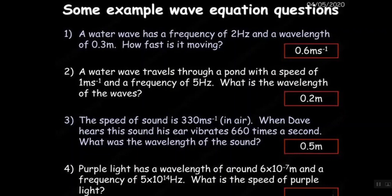Purple light has a wavelength of around 6 times 10 to the minus 7 meters and a frequency of 5 times 10 to the 14 Hertz. What is the speed of it? So we'll multiply them together and if you take a guess it is an electromagnetic wave so our answer would be the speed of light, 3 times 10 to the 8 meters per second.